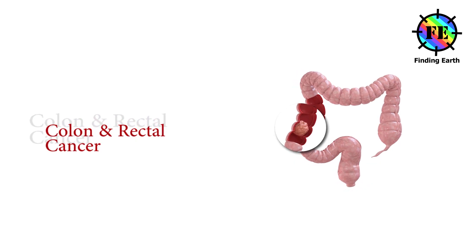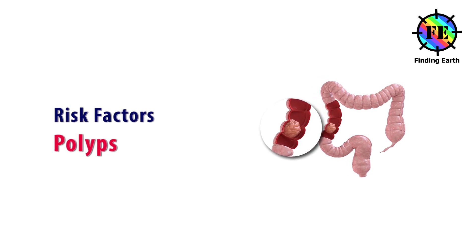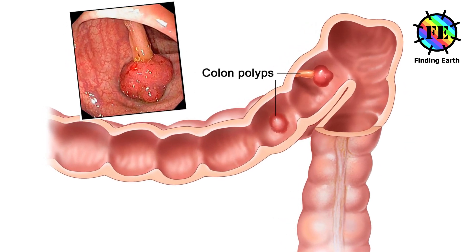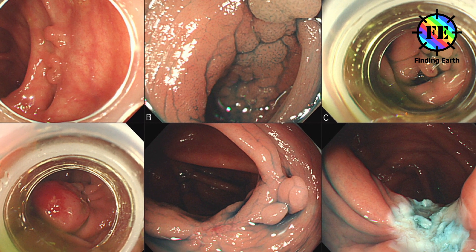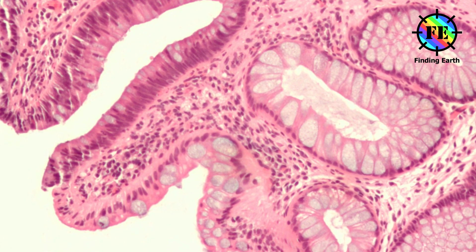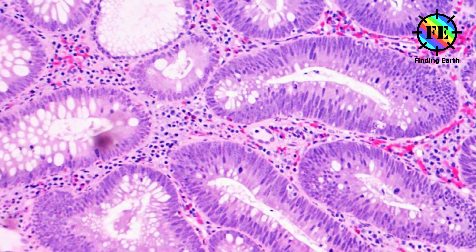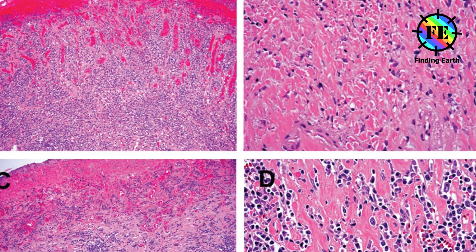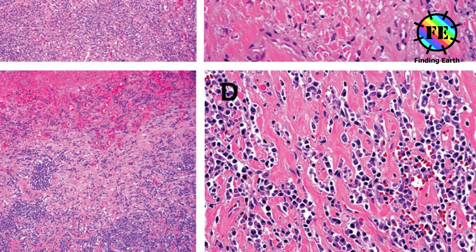Colon and rectal cancer risk factors. Polyps: Colon cancer usually derives from precancerous polyps that exist in the large intestine. The most common types of polyps are: Adenomatous polyps, which can become cancerous but are usually removed during colonoscopy. Hyperplastic polyps, which rarely become colon cancer. Inflammatory polyps, which usually occur after inflammation of the colon and may become cancerous.